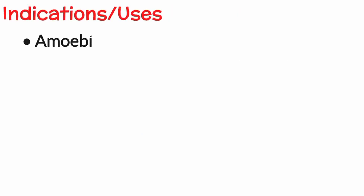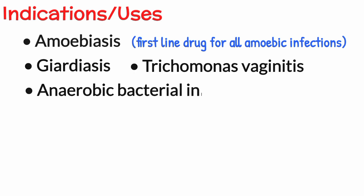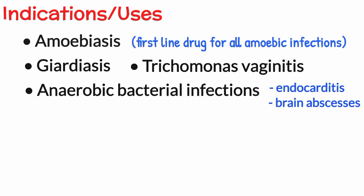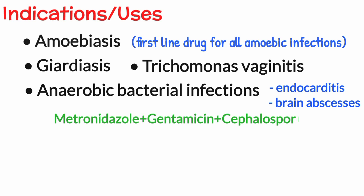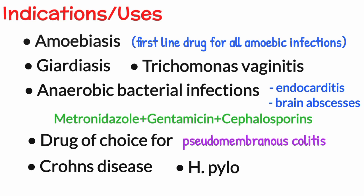Metronidazole is primarily indicated in conditions like amoebiasis — it is a first-line drug for all forms of amoebic infection — giardiasis, trichomonas vaginitis, and anaerobic bacterial infections like endocarditis and brain abscesses. It is generally used in combination with gentamicin or cephalosporins. It is the drug of choice for pseudomembranous colitis, and is also used in patients with Crohn's disease and Helicobacter pylori infection.